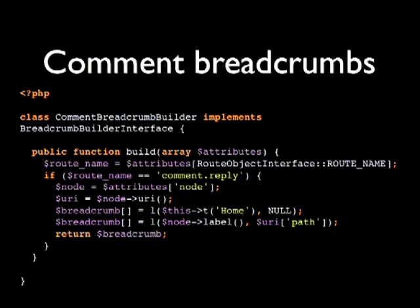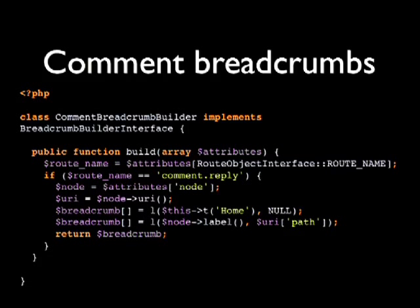Here's an example of comment breadcrumbs. If this is the comment reply route, you find the node, and the breadcrumb is home then a link to the node — not just the comment name. Anyone can provide breadcrumbs with this new BreadcrumbBuilderInterface. My favorite breadcrumb module was breadcrumbs by path — it takes the title from each page in the URL — and that's actually in core now. The default implementation looks at each path and finds the title instead of working off the magic menu structure.